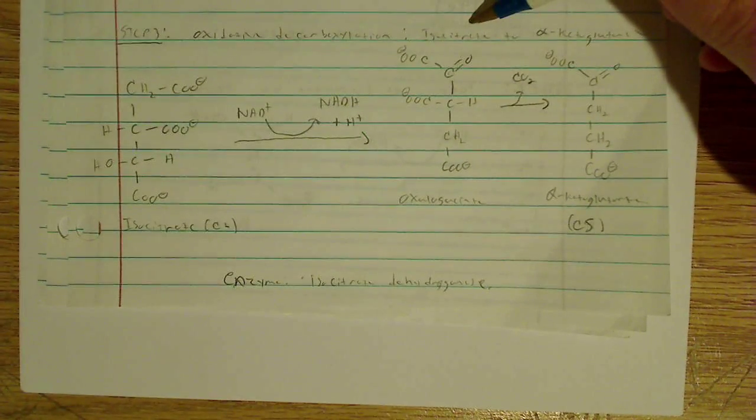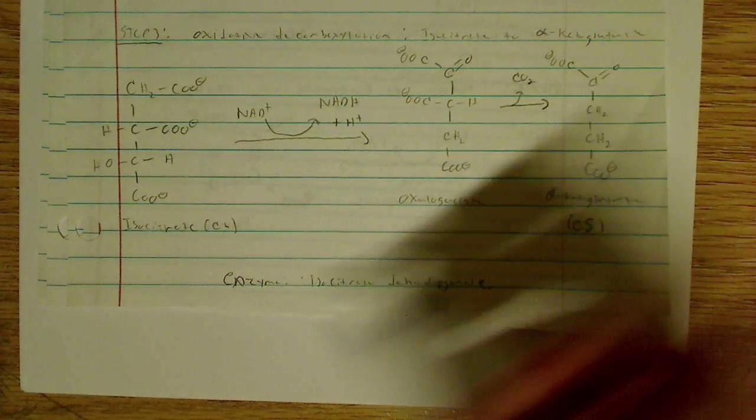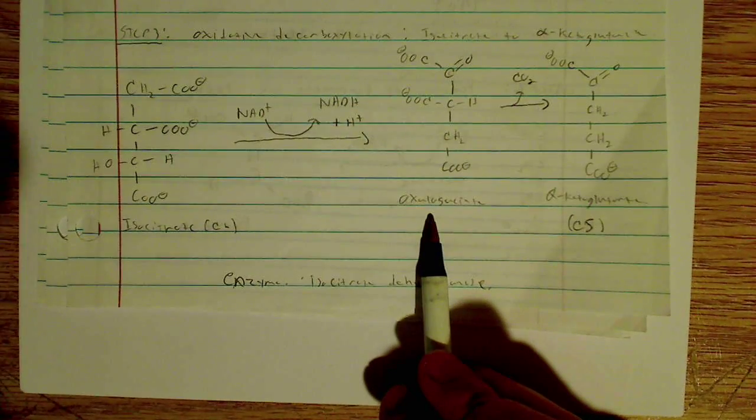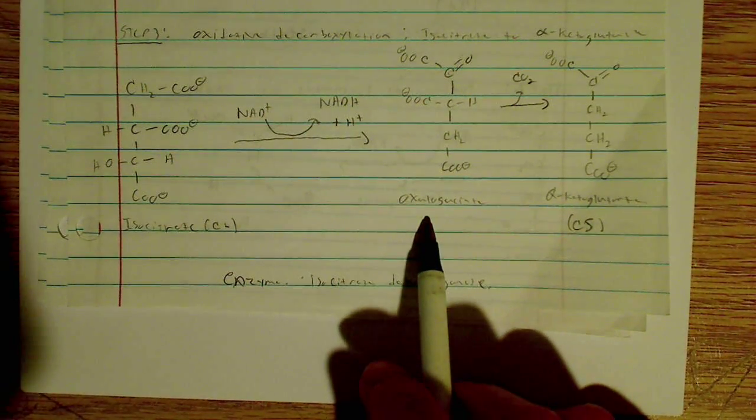And here's my first oxidative decarboxylation with isocitrate to alpha-ketoglutarate. And notice there is an intermediate here. I didn't talk about it because it's not all that essential, but there is another little step here.